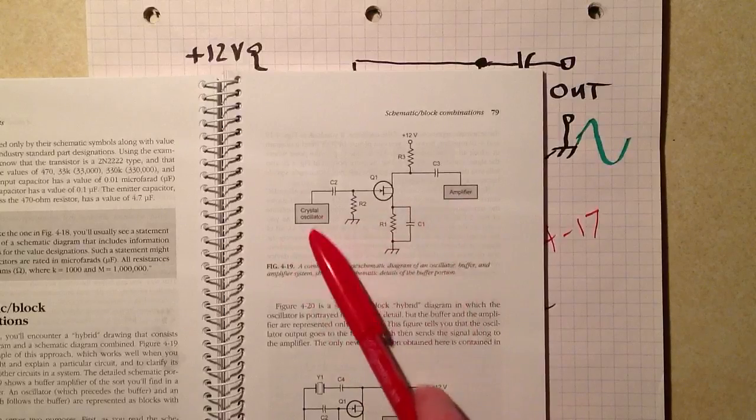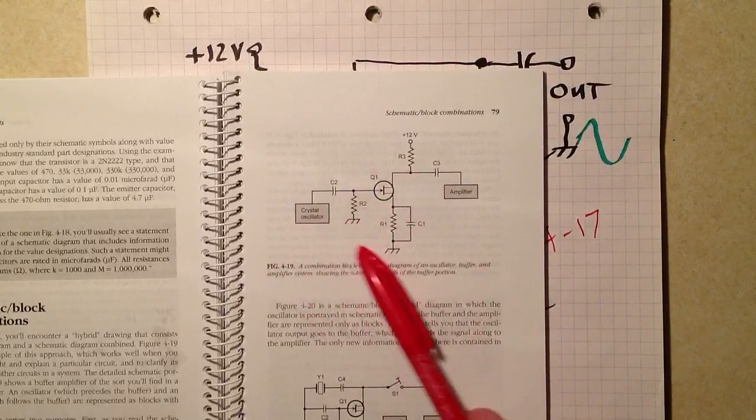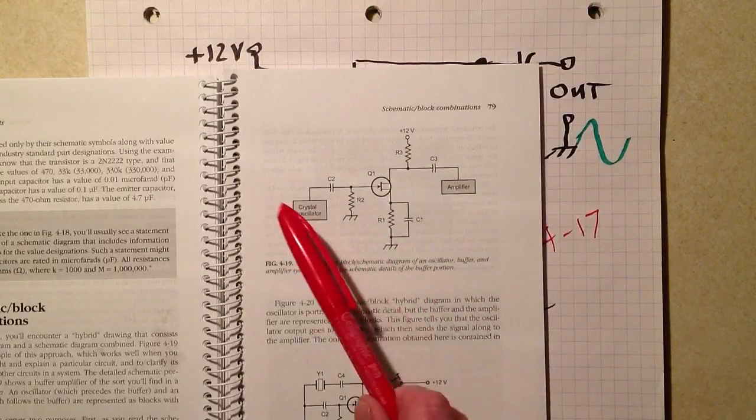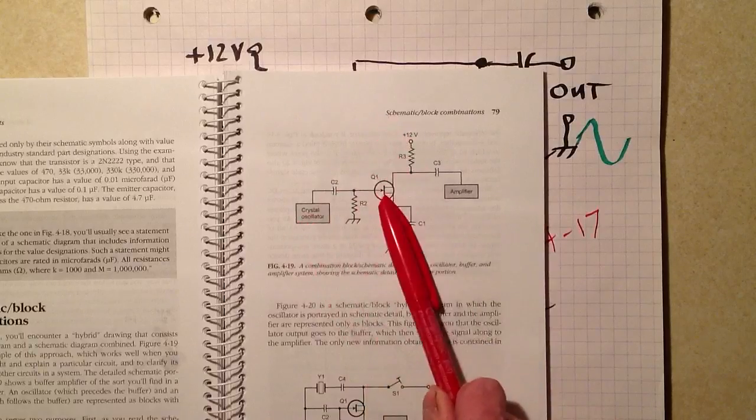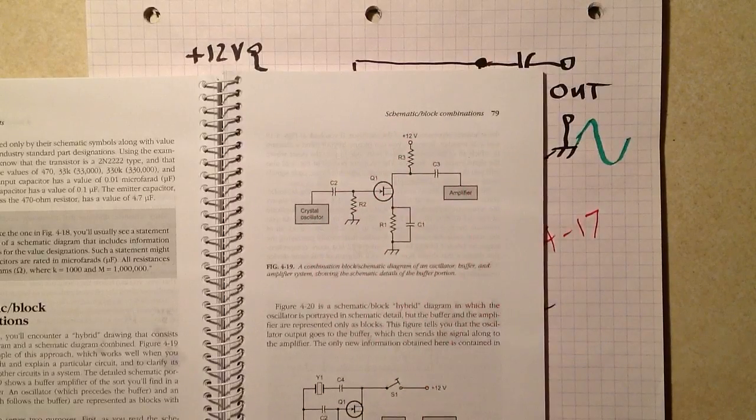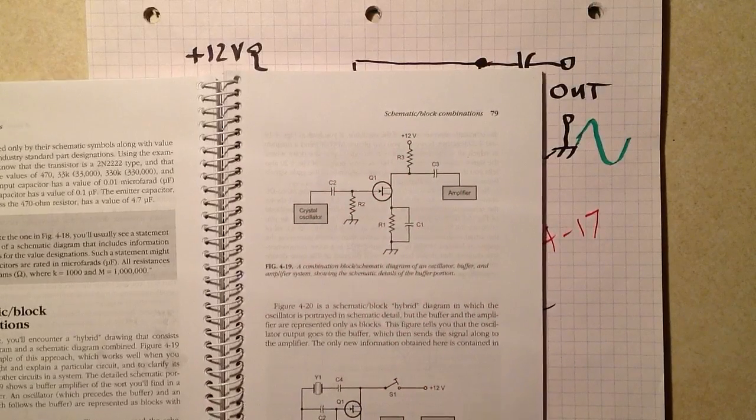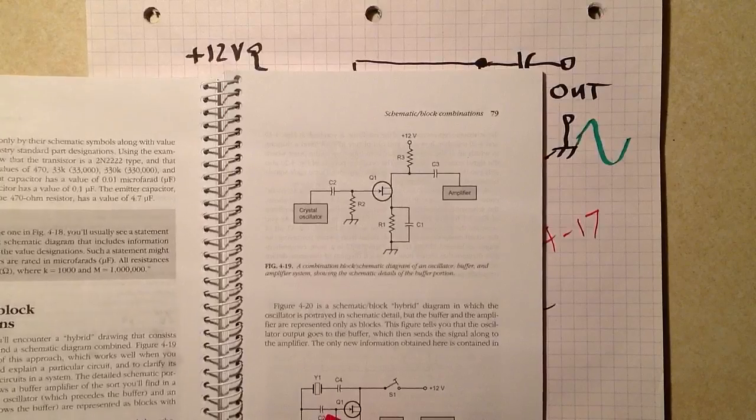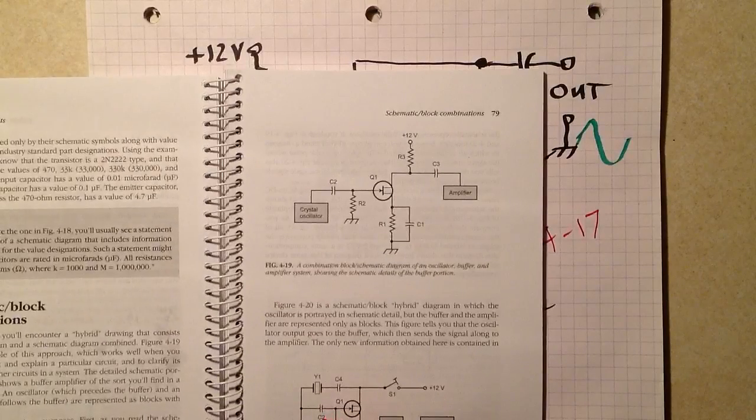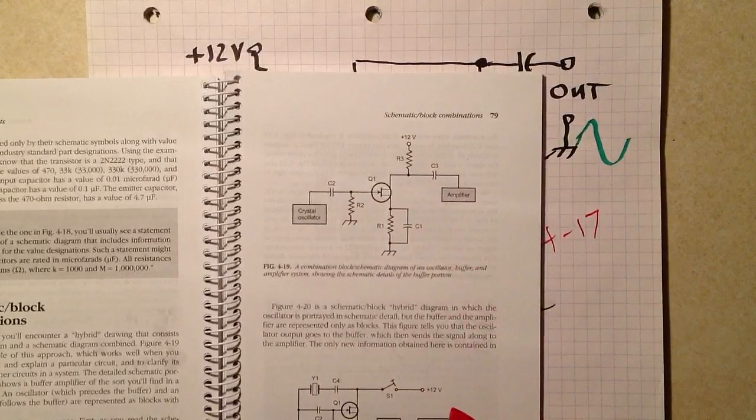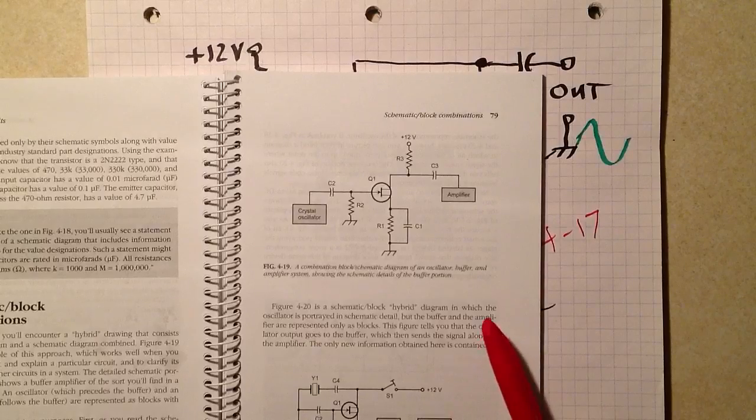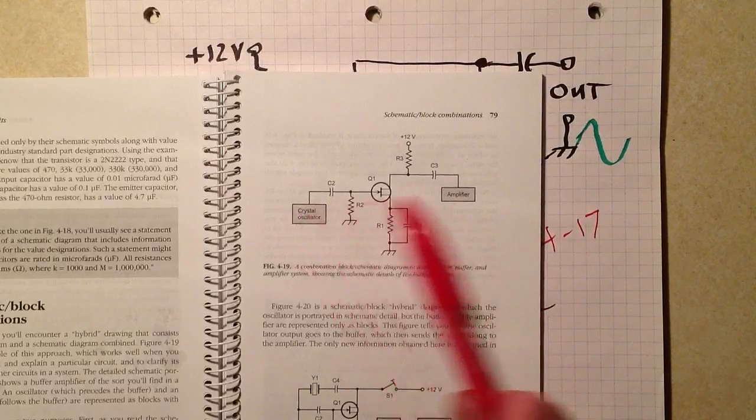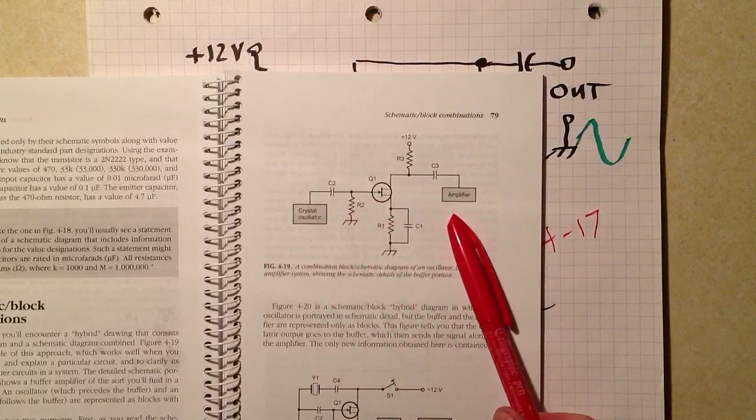It's a generic or a hybrid block diagram, schematic diagram: crystal oscillator, buffer, and amplifier. Well, what the heck? You might ask yourself, what the heck is a buffer circuit for? Well, a buffer is, in fact, just an amplifier that serves to isolate two other circuits from each other.